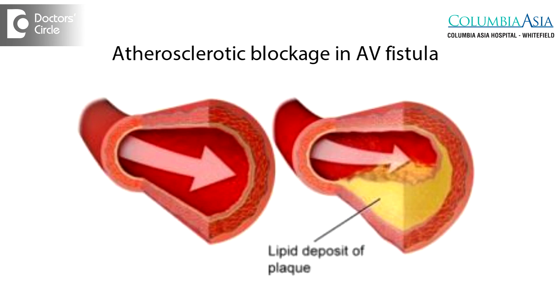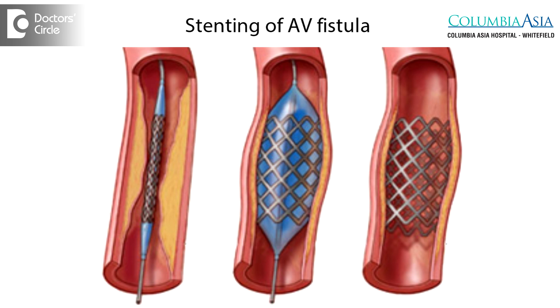We also specialize in our hospital in what is called salvage for failing fistulas. These AV fistulas over time tend to close down — they may not mature properly, or they form atherosclerotic blocks so that dialysis is not done properly. For those patients, we take them to the cath lab or into surgery and try to salvage those failing fistulas, whether by balloon angioplasty or by stenting, so that they can be salvaged for further use.